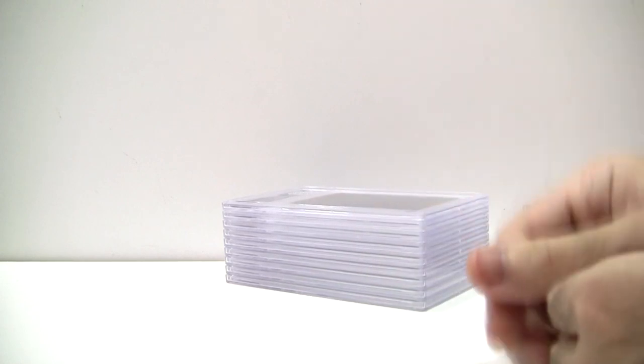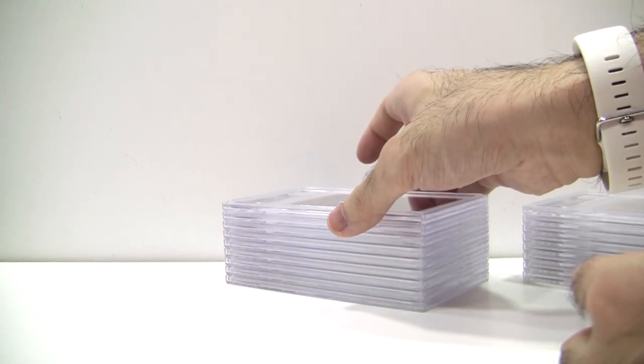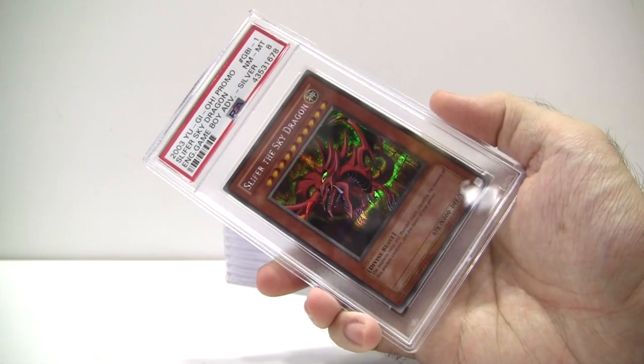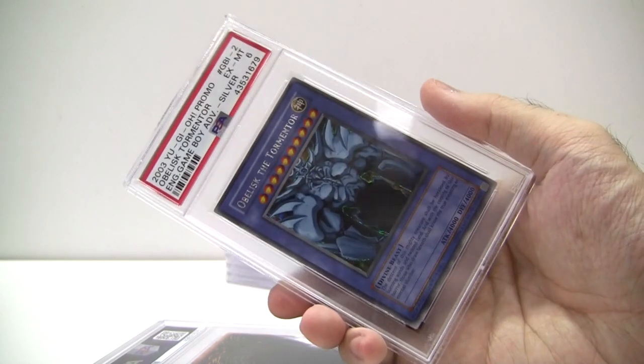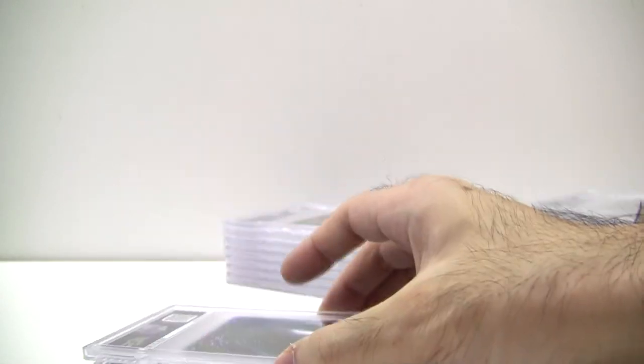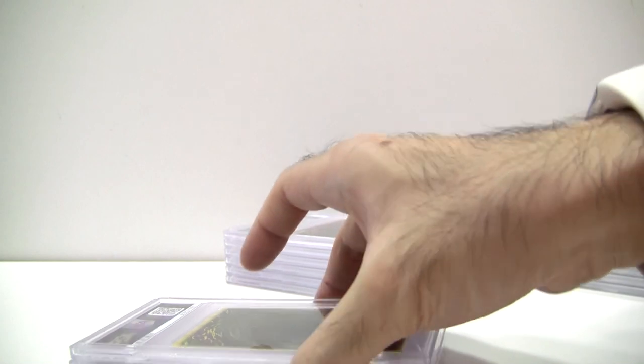Moving on, we have yet another set of game promos. This time the first ever English renditions of the Egyptian God cards. We have GBI-001 Slifer the Sky Dragon, GBI-002 Obelisk the Tormentor, and GBI-003 The Winged Dragon of Ra, that came with the Japanese game Duel Monsters International Worldwide Edition.